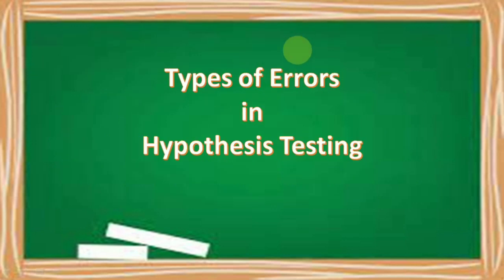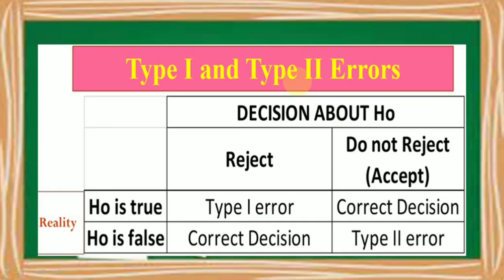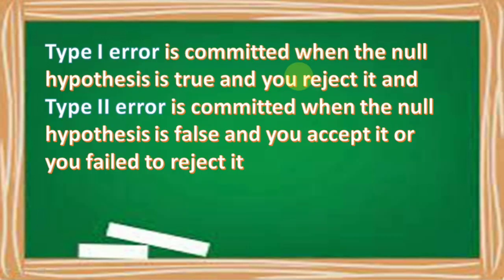Let us now discuss the types of errors in hypothesis testing. If the null hypothesis is true but you reject it, this is a Type 1 error — the correct decision should be to not reject it. If the null hypothesis is false but you accept it, this is a Type 2 error — the correct decision should be to reject it. In summary: Type 1 error is committed when the null hypothesis is true and you reject it; Type 2 error is committed when the null hypothesis is false and you accept it.